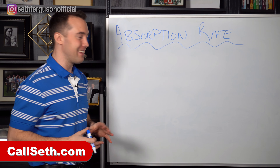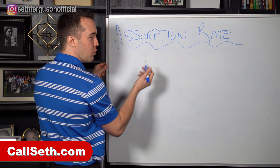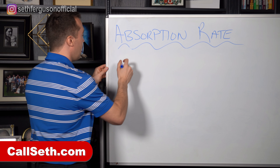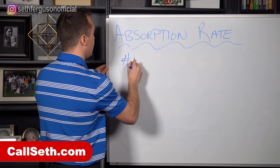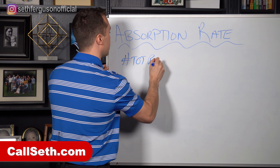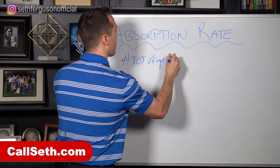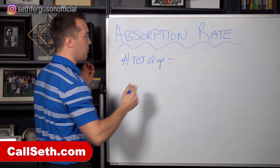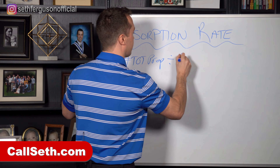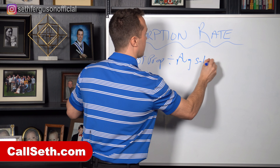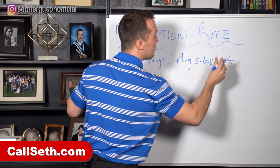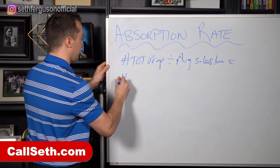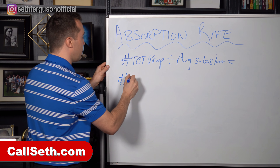I'm going to show you two examples — one for buying and selling and one for leasing property, even though it is exactly the same. For the selling side, if we're looking at buying or selling property, we're going to take the total number of available properties and divide it by the average number of sales per month, and that's going to give us how much inventory is remaining.